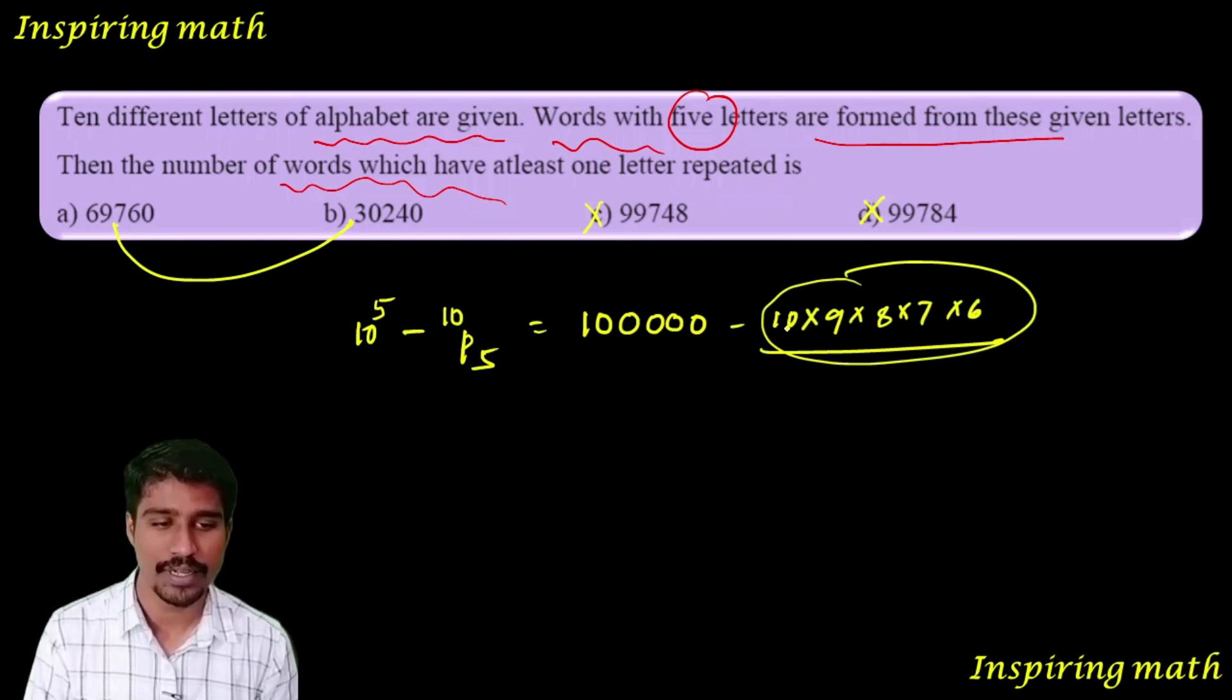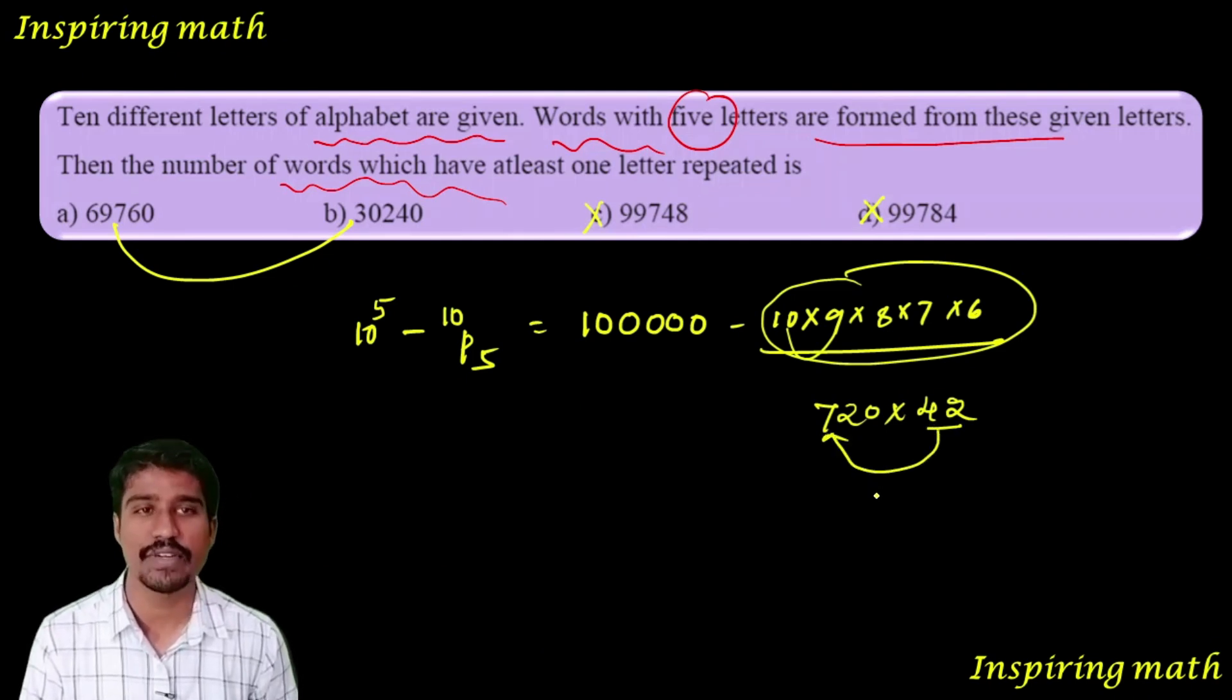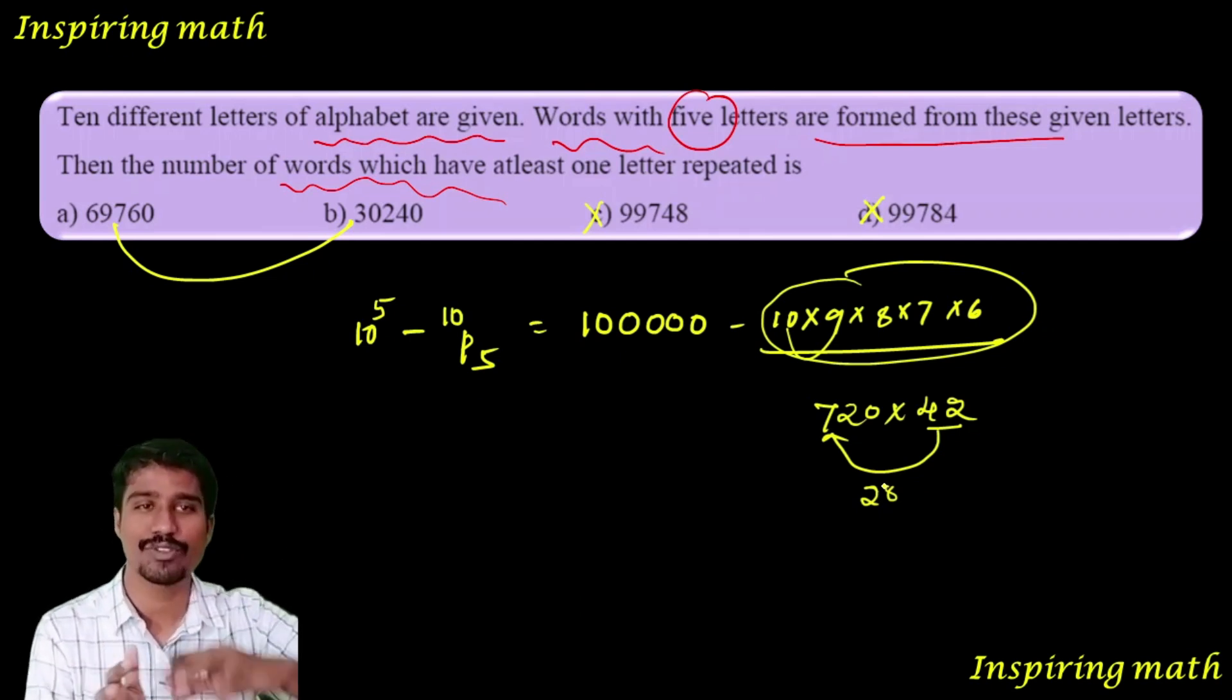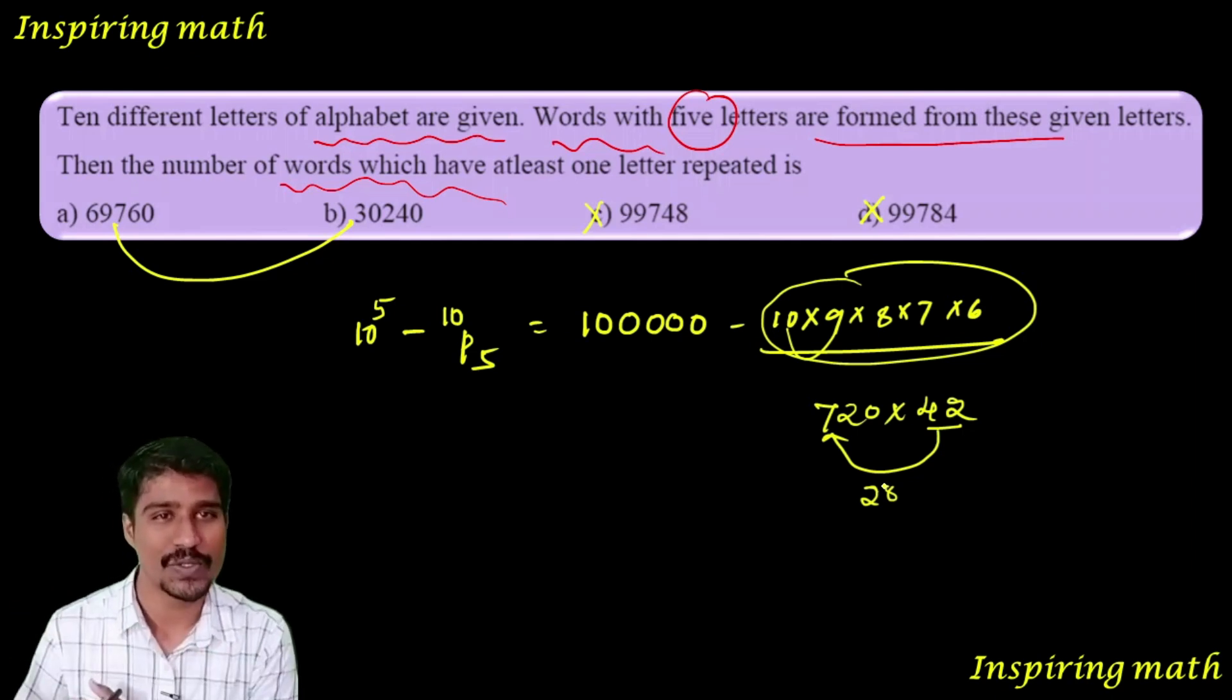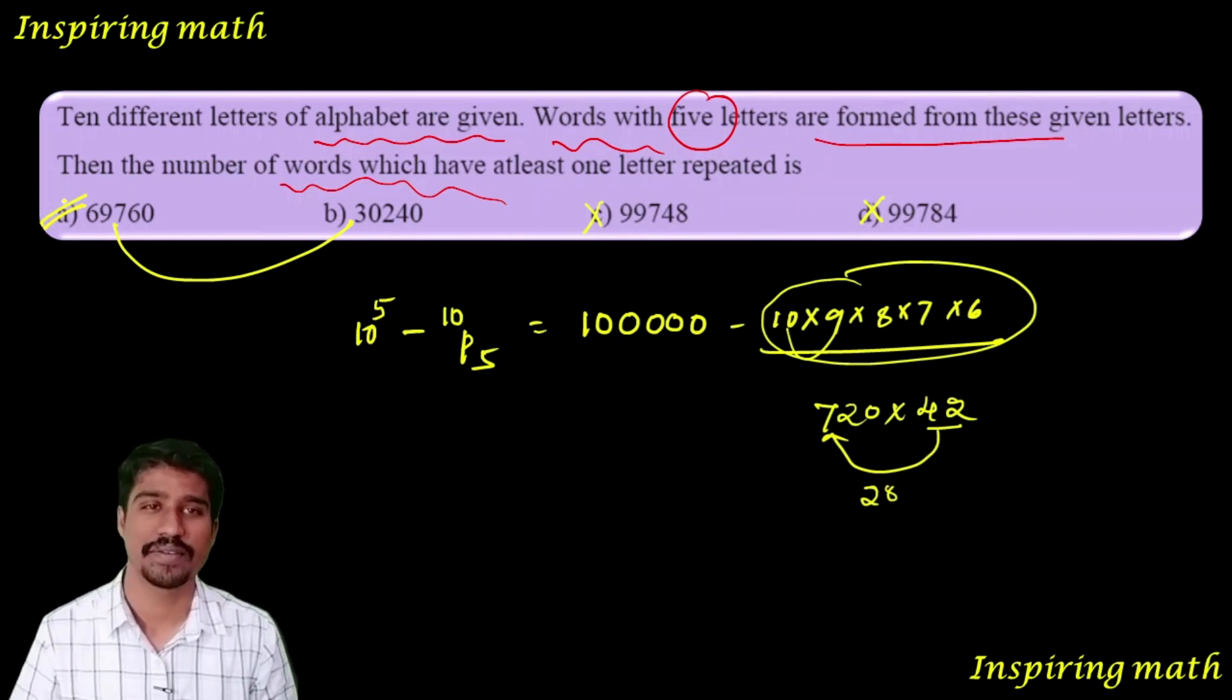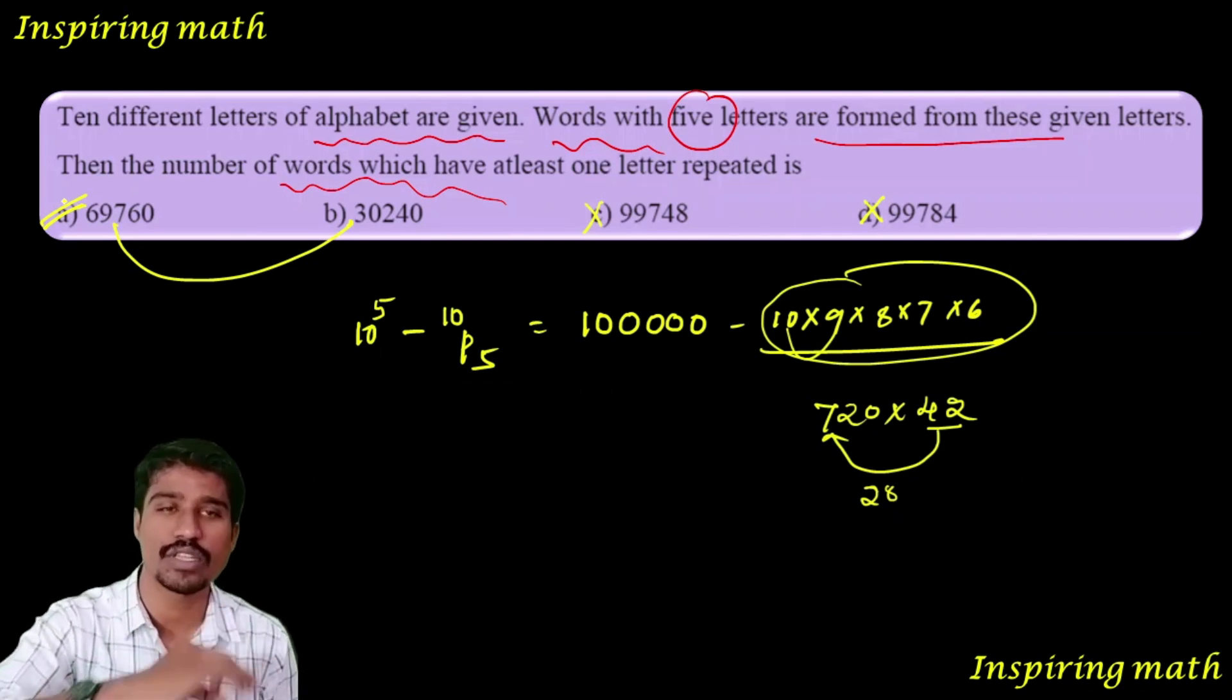The answer is 99,748. Calculate: 9 times 8 is 72, that's 720, into 7. Then 7 times 6 is 42. Subtract from 100,000 to get around 70,000, so option B is the answer. Complete calculation is essential; without concept it is highly impossible.